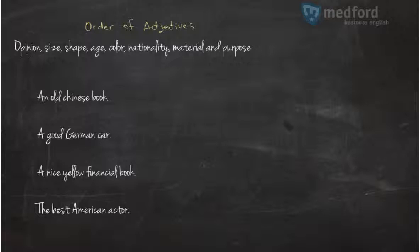And the order is opinion, size, shape and age, color, nationality, material and purpose. Let me put the number here. So this is 1, 2, 3, 4, 5, 6, 7 and 8.